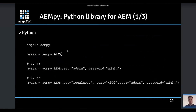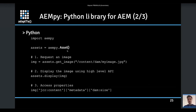AEM-py is the Python library for AEM. It's very simple — you do 'import aempy', then instantiate AEM by specifying the user and password or the URL of your AEM instance. By connecting to AEM, you can request any content directly. For example, you build an asset object, request an image from the DAM, display it, and play with the properties of that image.